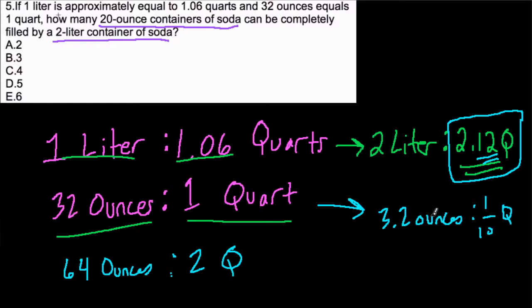What does this tell you? Well, 0.12 of a quart is slightly more than a tenth. And that's only another 3.2 ounces or so. But every container of soda is 20 ounces, right? And we have 64 ounces.